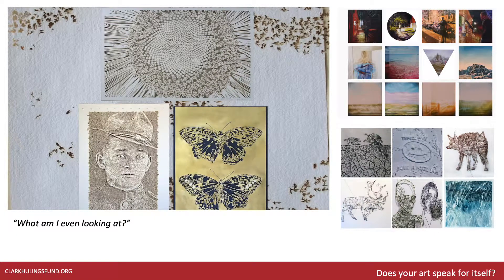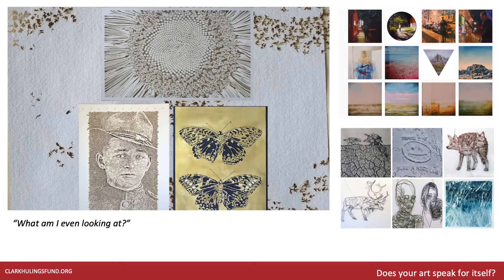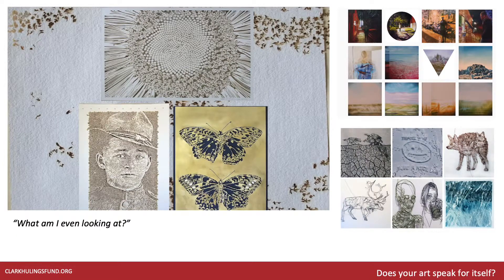I've talked about a whole laundry list of different types of images you're going to want to consider and use in different situations, but you've also got to have the written collateral as well. At the very basic level, that's titles, description, and size — which will tell us what the materials are and what something is made of.